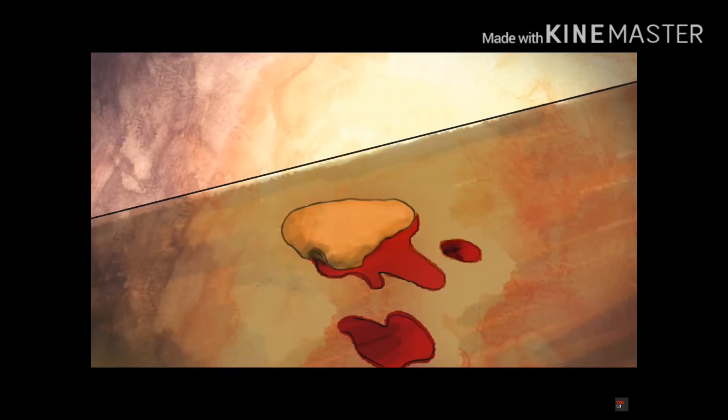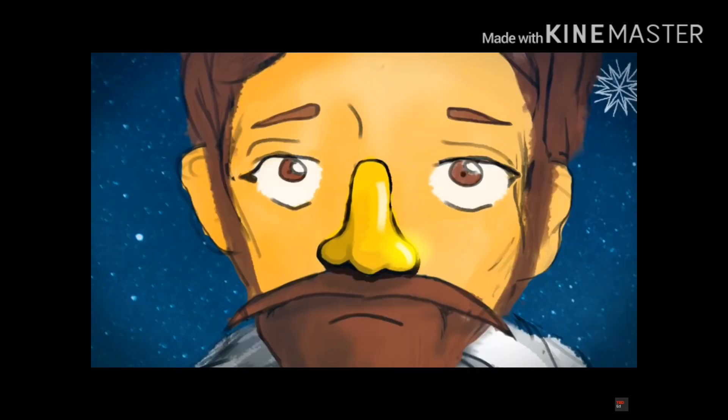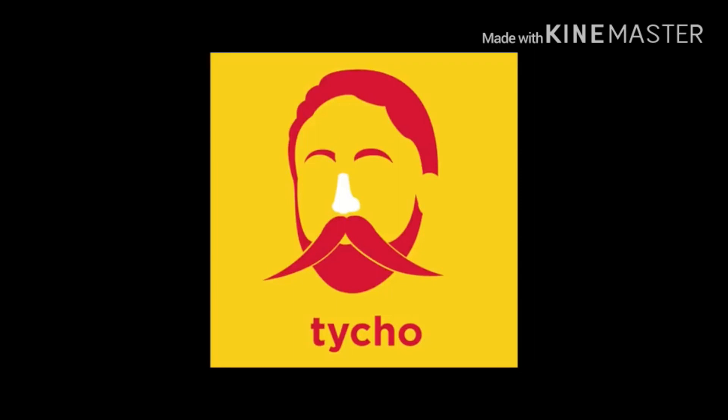In the fight, Brahe lost a good chunk of his nose. He wore a metallic, probably gold or copper nose throughout his life.